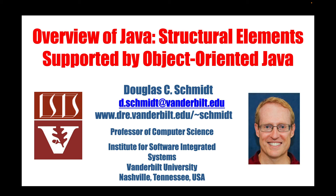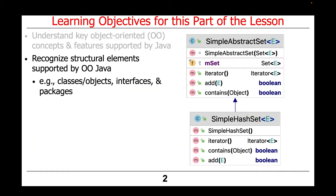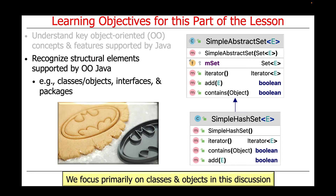Now that we've given an overview of key concepts and features supported by Object-Oriented Java, we're going to zoom in and take a look at some of the structural elements supported by Object-Oriented Java, including classes, objects, interfaces, and packages. We'll focus primarily on classes and objects in this discussion.